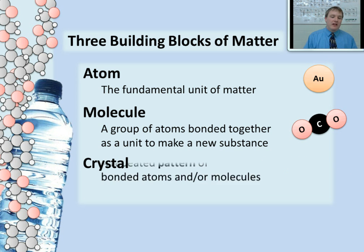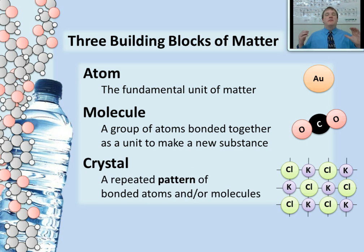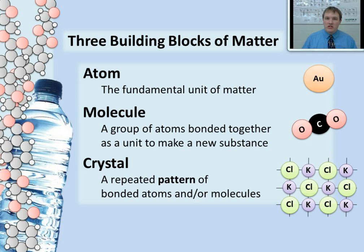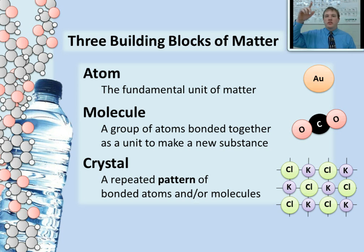The final building block of matter is known as a crystal. A crystal is a repeating pattern of bonded atoms, or bonded molecules, or bonded atoms and molecules. Here I show you an example of potassium chloride, which forms crystals in nature. Potassium chloride is often used as a fertilizer — you can also eat it as a salt substitute if you need extra potassium in your diet. Notice how I picture a crystal: I show you the individual repeating pattern of atoms or molecules, and I show you the crystal lattice network in the background, showing that these are all bonded together in that repeating pattern.